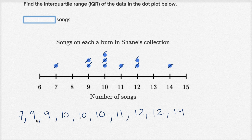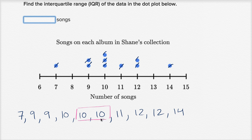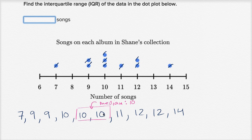The data is already in order, so I can immediately start calculating the median. I have ten numbers — an even number — so to calculate the median I look at the middle two numbers. The middle two numbers are both tens, with four to the left and four to the right. Since I'm calculating the median using two numbers, it's the average of ten and ten, which is just ten. So the median is ten.